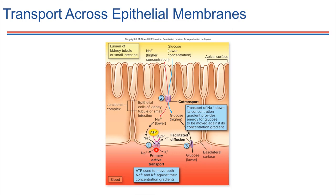On this side — the basolateral membrane — we have sodium-potassium pumps. Those pumps are going to pump sodium ions out of the cell and pump potassium ions into the cell. They use ATP to do that, moving these ions against their concentration gradients.